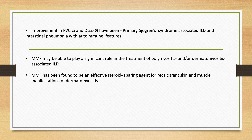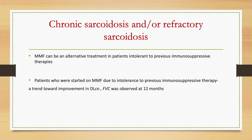It has also been reported that in ILDs with Sjogren's syndrome and autoimmune features, MMF could be a very good drug to start with. It also has a significant role in polymyositis and dermatomyositis-associated ILD, and has shown a steroid-sparing effect in dermatomyositis for skin and muscle manifestations as well. Coming to chronic or refractory sarcoidosis, MMF can be used as an alternative treatment if patients are intolerant to previous immunosuppressants, with improvement in DLCO and FVC at 12 months.